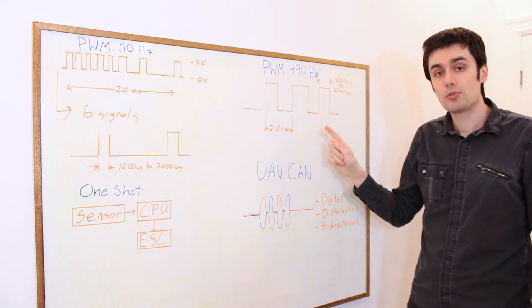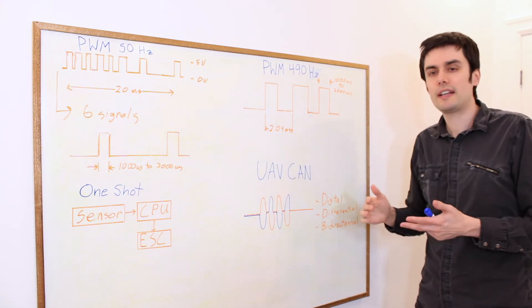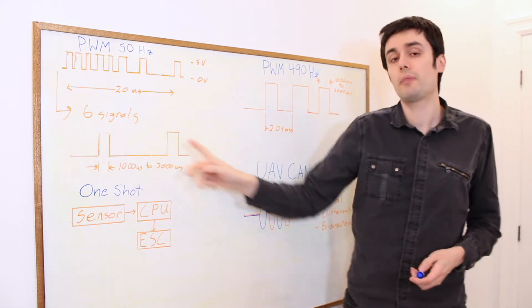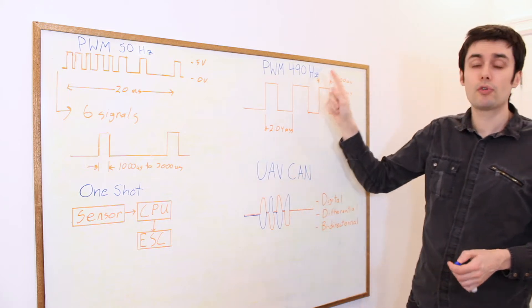When we started developing drones, we realized that 50 Hz wasn't fast enough, and there's a whole lot of space between your updates. That's how we got PWM at 490 Hz.